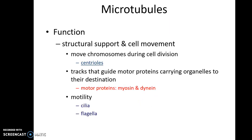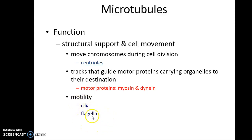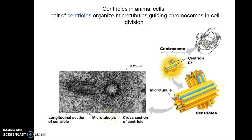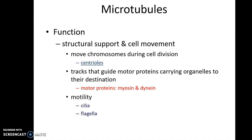The microtubule structure provides support, so it has a function in structural support and cell movement. The classical importance of microtubules is seen in organizing chromatids during cell division. Microtubules also guide motor proteins which carry organelles to their destination, and they facilitate motility via cilia and flagella — in other words, cilia and flagella are made up of microtubules, enabling them to show movement.